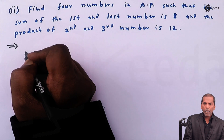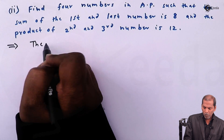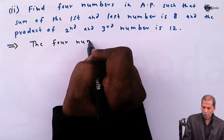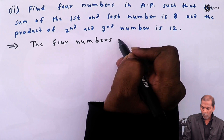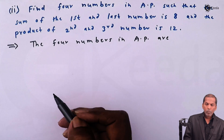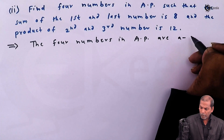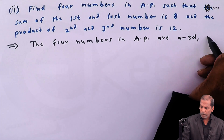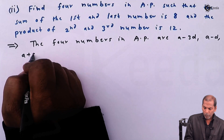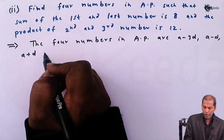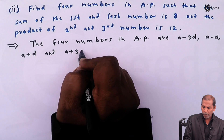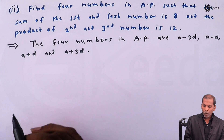The 4 numbers in AP are: a minus 3d, a minus d, a plus d, and a plus 3d.